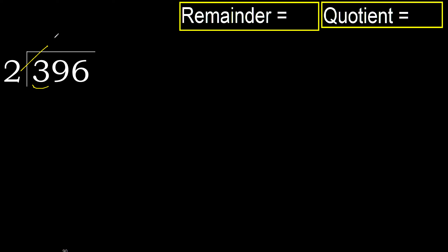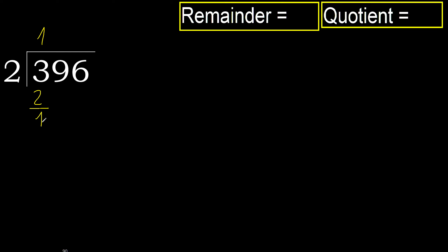2 multiplied by 2 is 4 — 4 is greater. Multiply by 1: 2 multiplied by 1 is 2, which is not greater. Subtract: 3 minus 2 is 1.